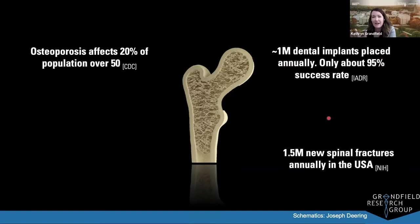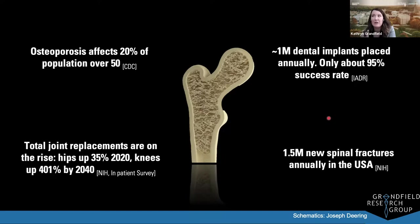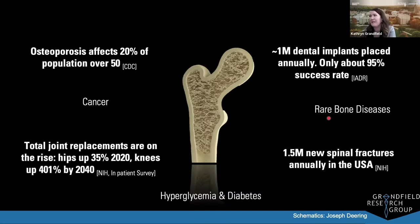Other reasons bone research is important: dental implants are placed inside bone, with about 1 million placed every year in the U.S., but only a 95% success rate, so a considerable number are still failing. Joint replacements such as hip and knee replacements are on the rise — about a 400% increase is expected by 2040. There's also cancer, hyperglycemia and diabetes, and other rare bone diseases that affect bone. Understanding bone structure is essential for developing new treatments and improving surgical outcomes.